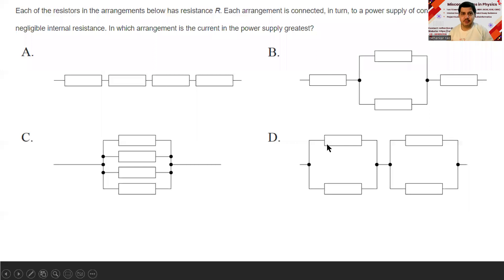Right. Now the questions are MCQs which are catered for the IBDP program or IGCSE program or A and AS levels. All these questions are being taken from the IBDP papers only. Now, let us solve this. Each of the resistors in the arrangement shown below has a resistance R and each arrangement is connected in turn to a constant power supply of constant EMF and negligible internal resistance. In which arrangement is the current in the power supply greatest?